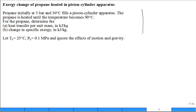What does that look like? Here's our cylinder, there's our piston, it has some weight on it. The weight basically dictates the pressure of the gas trapped inside the piston cylinder apparatus. So this is our closed system. That's the propane. The propane is heated until the temperature becomes 90 degrees C.